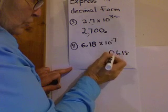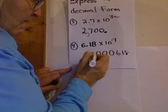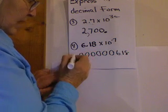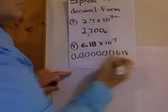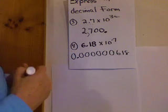So, there's 1, 2, 3, 4, 5, 6, 7. The decimal point. Proper form is another zero here. There's the answer. So, expressing decimal form from scientific notation.